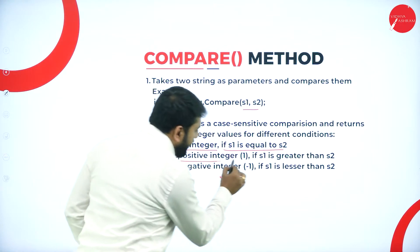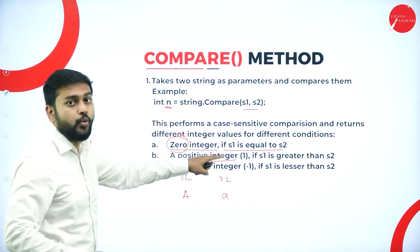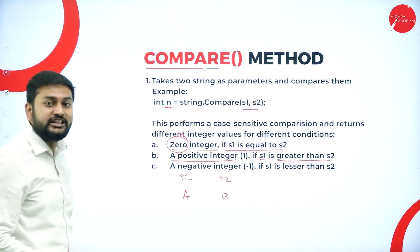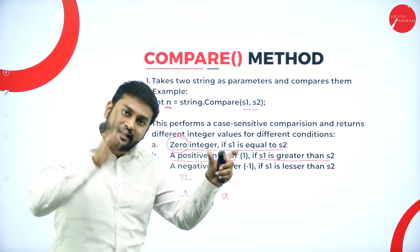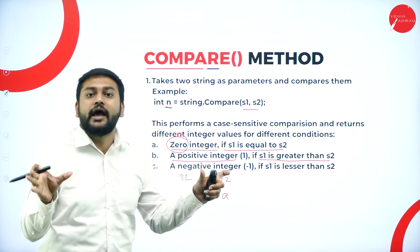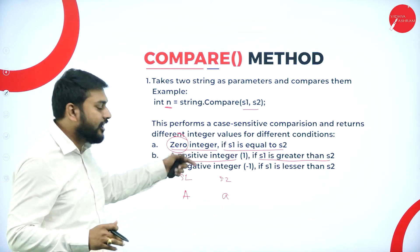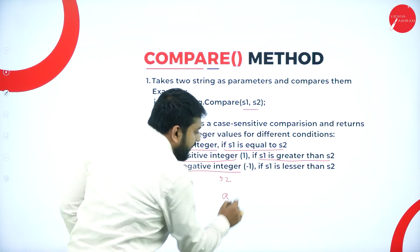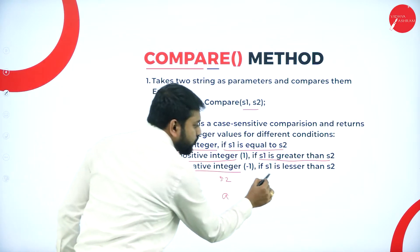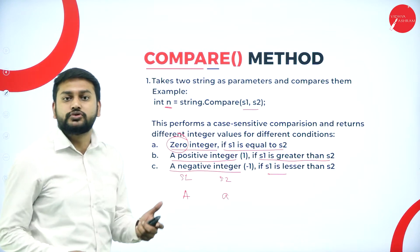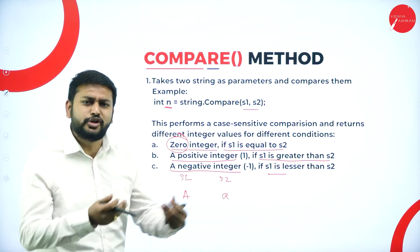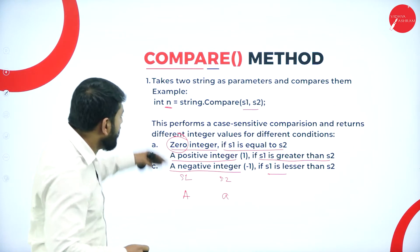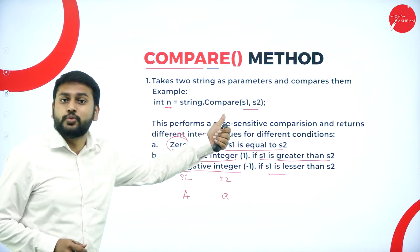If I get a positive integer — say 1 — that means s1 is greater than s2. The ASCII value in s1 is greater than the ASCII value in s2, and only then will I get a positive value. I will get a negative value when s1 is less than s2. As I said, it compares the ASCII values — that's what you need to remember. This is how the compare method works.